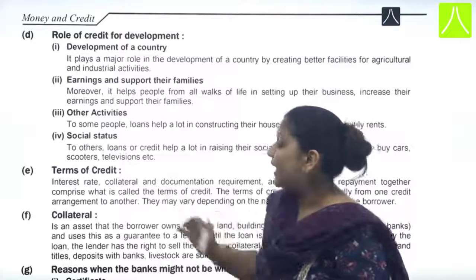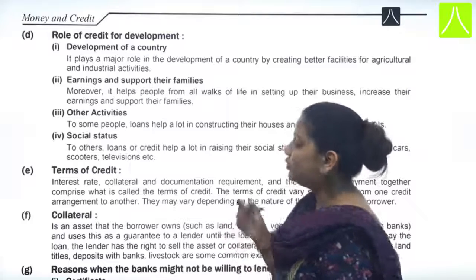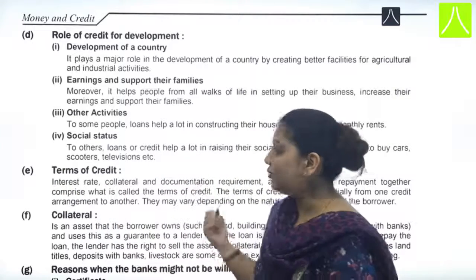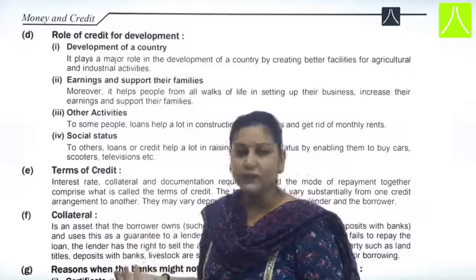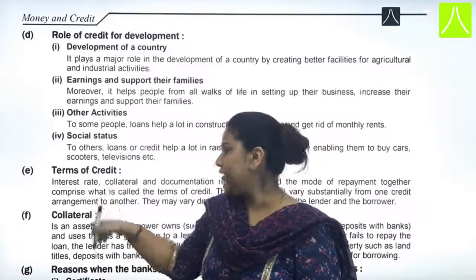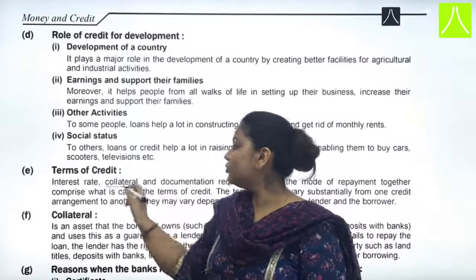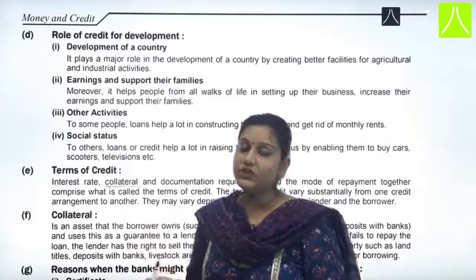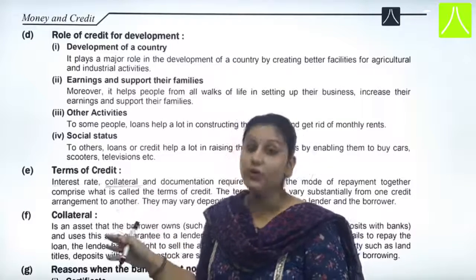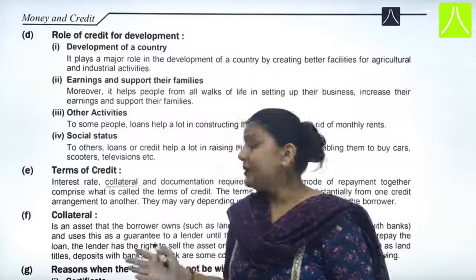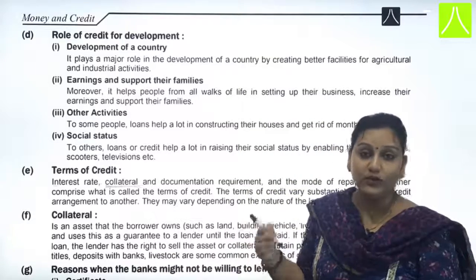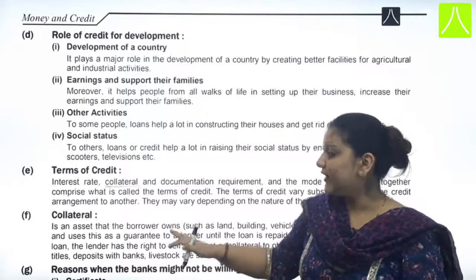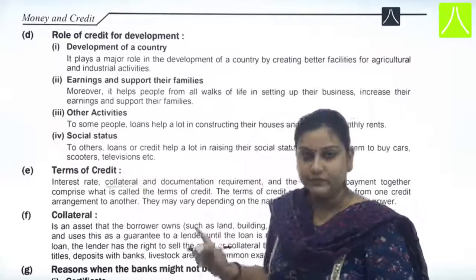Now when you go to borrow from a bank, the bank pays attention to certain things. The interest rate will be different for every loan — car loan has a different rate, housing loan has a different rate, personal loan has a different rate. Second, the bank will ask you to keep something as security. For a 10 lakh loan, you need to mortgage something of equal value — this is for security reasons, so if you default, the bank can recover its money. What you keep as security is called collateral.